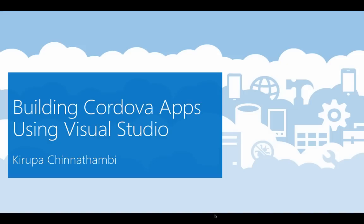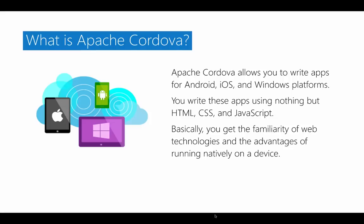Hi everybody. In this video, we're going to take a look at how to build Apache Cordova apps using Visual Studio. We're going to start at the very beginning and then gradually look at the functionality that both Apache Cordova and Visual Studio provide for using web technologies – HTML, CSS, and JavaScript – to build apps that run on Android, iOS, and Windows devices. So let's go ahead and get started.